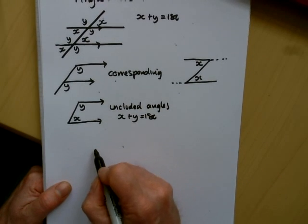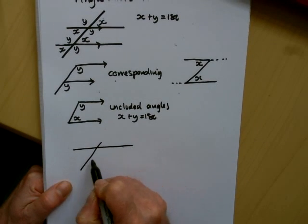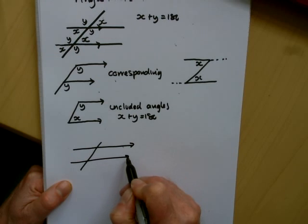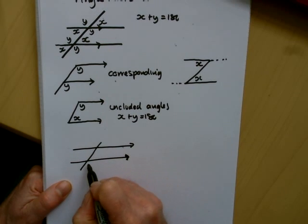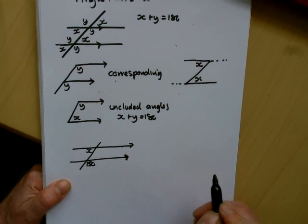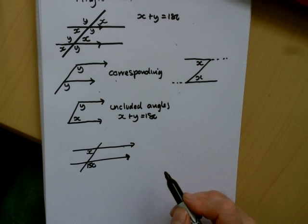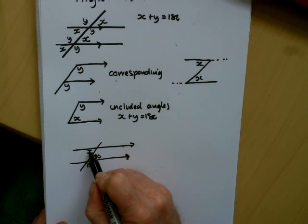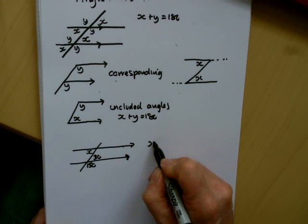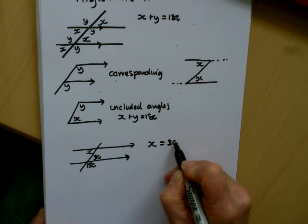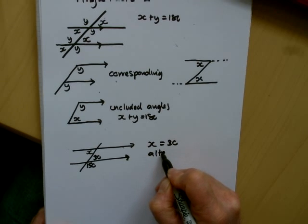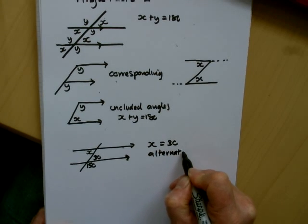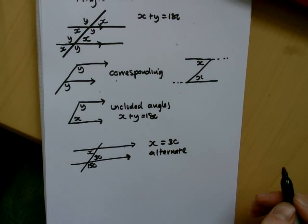We'll put a few examples down here to show you. We have the same sort of setup — a line with arrows indicating the lines are parallel. Say that angle is 150, and we're asked to find x. The angle on the straight line is 30, and you can see that x and 30 are alternate angles. In these questions you have to give your reason, so the reason that x is 30 is it's an alternate angle.